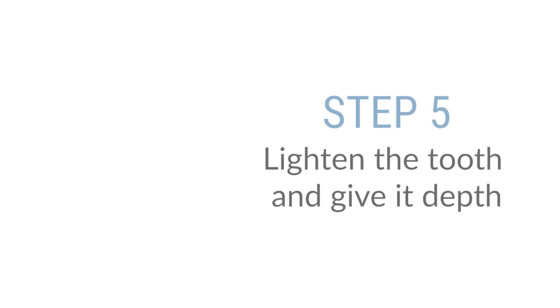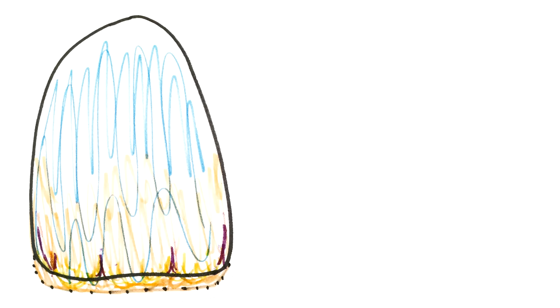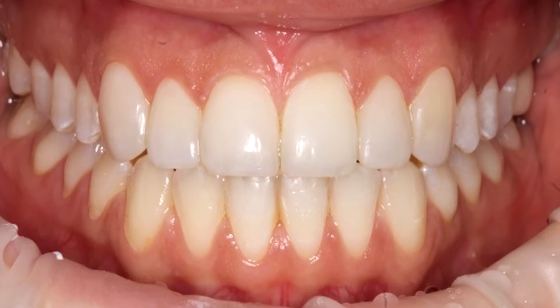And the last layer, because we wanted to lighten the tooth just a little bit and give it some depth, I'm going to use for this the incisal light. It's a very achromatic but still a little lighter than the B1 and it gives depth and a little bit more lightness to the shade of the tooth.